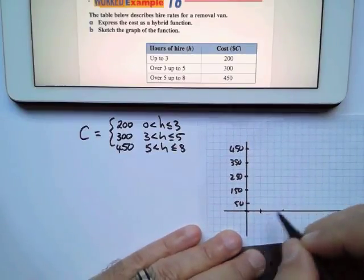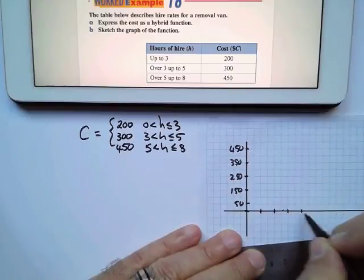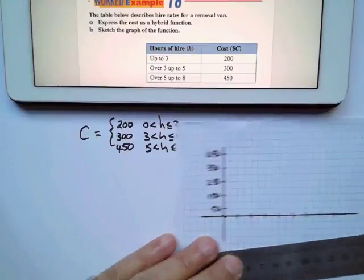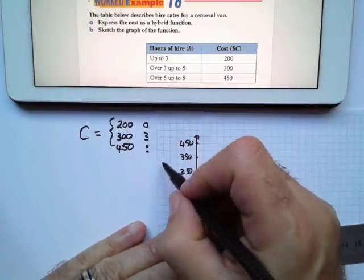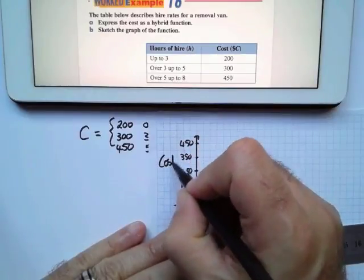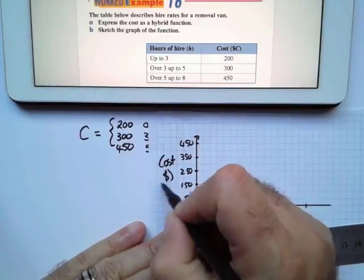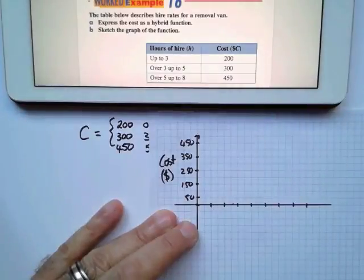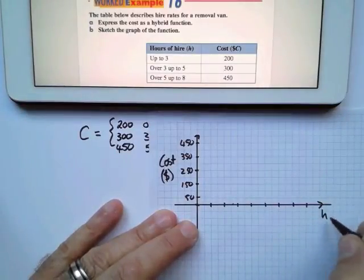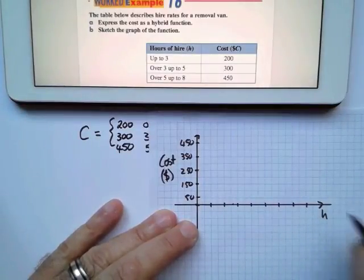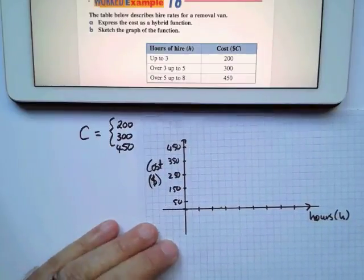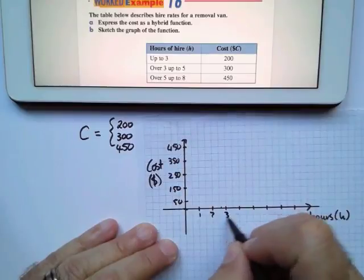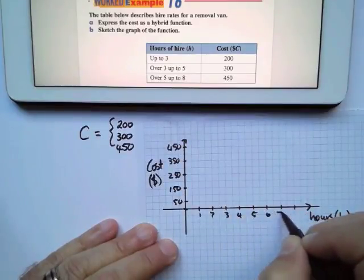And I'm going to say it's 1 hour, 2 hours, 3 hours, 4 hours, 5 hours, 6 hours, 7 hours, and 8 hours. So this is going to be the cost in dollars. This is going to be my hours, and this is going to be 1, 2, 3, 4, 5, 6, 7, 8.